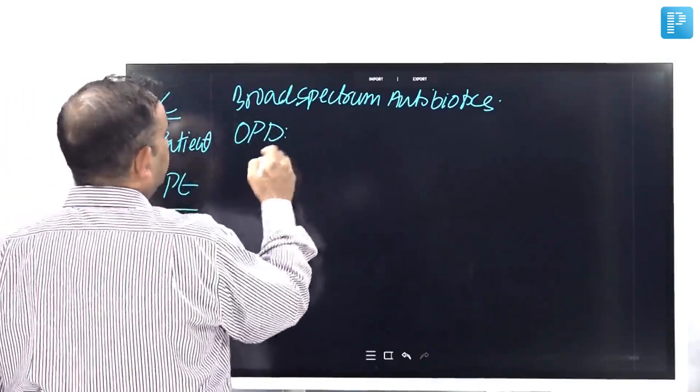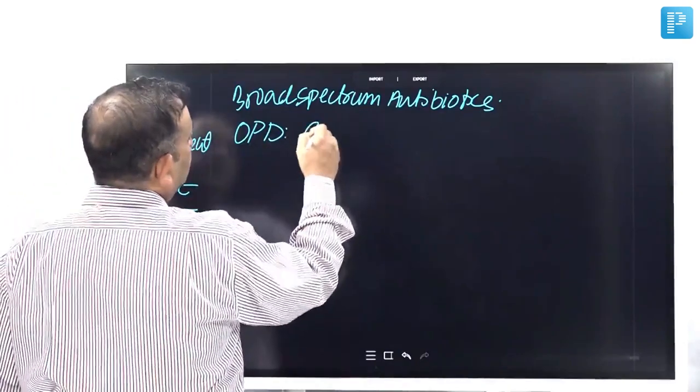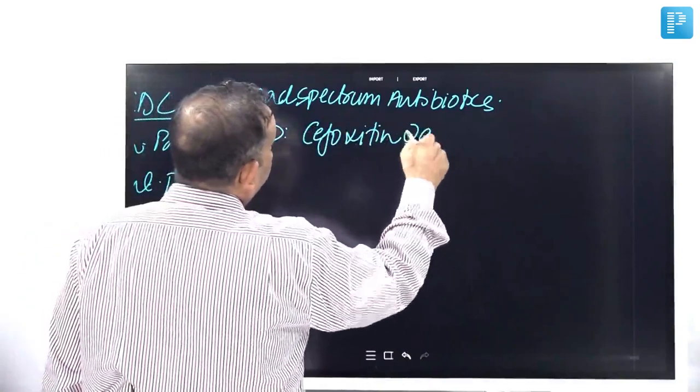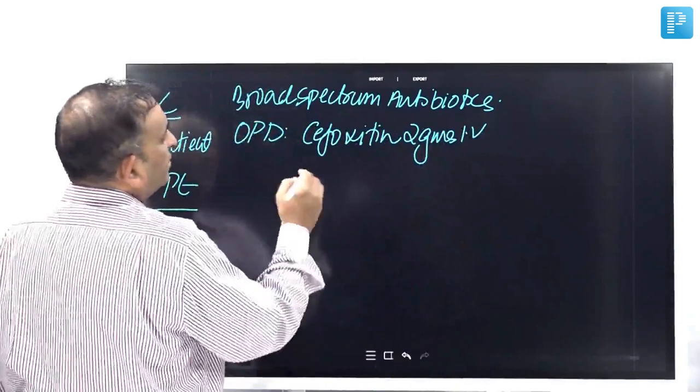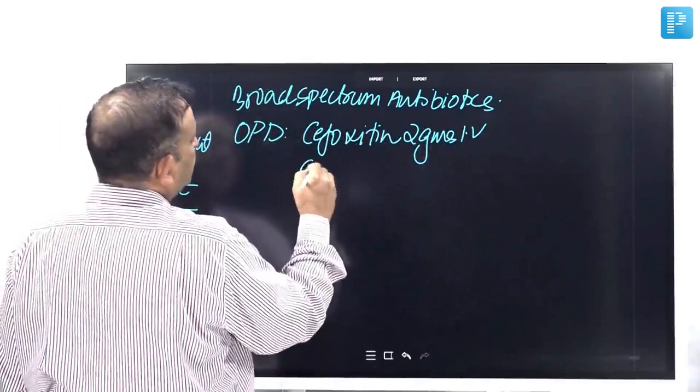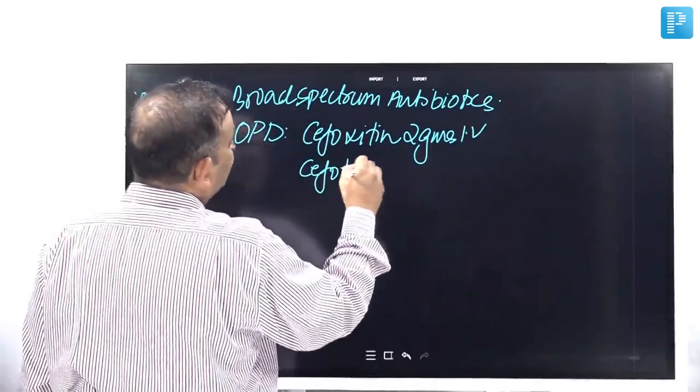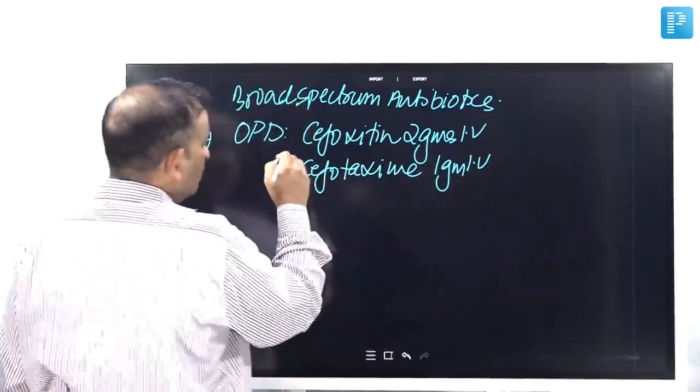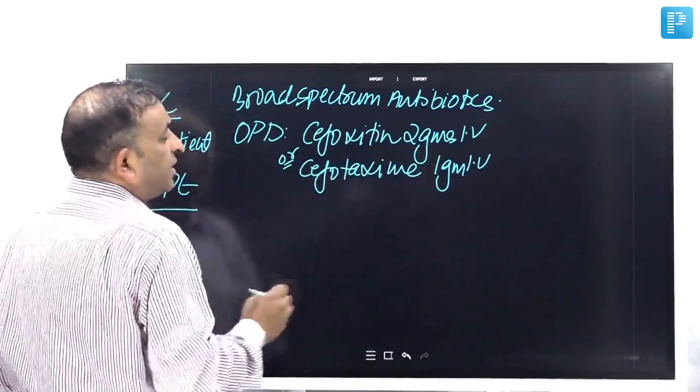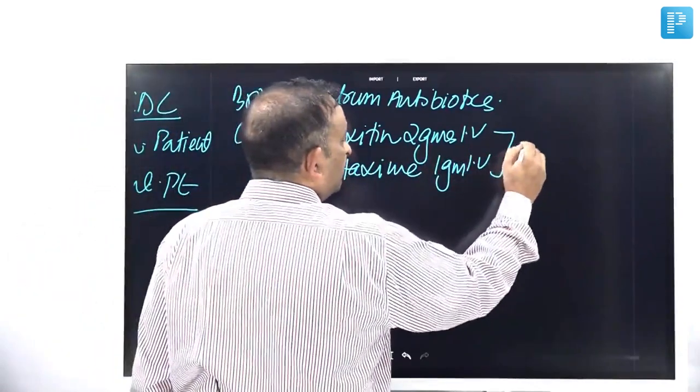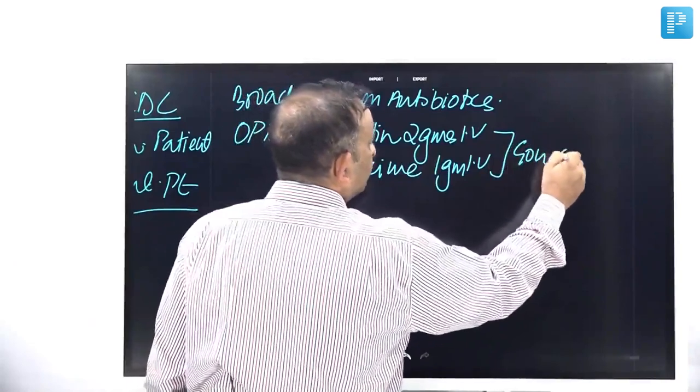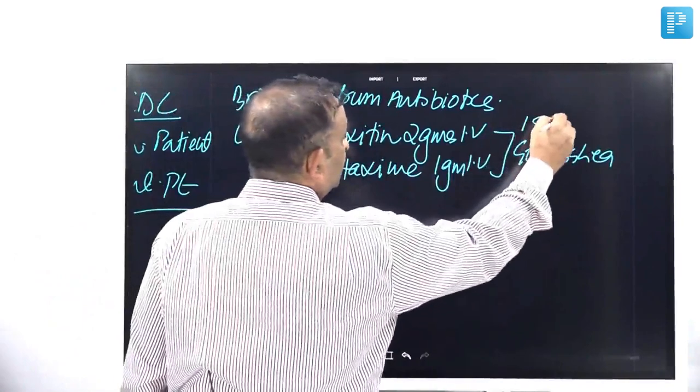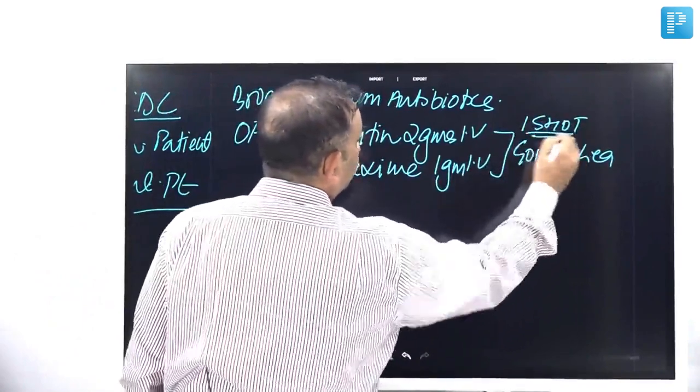Broad spectrum antibiotics on outpatient basis, you can give, let's say, Cefoxetin 2 grams IV or you can give Ceftriaxone 1 gram IV. I'm not saying both. This will take care of the gonorrhea. Just one shot, one shot. I'm not saying that you'll continuously give it, just one shot of these drugs.